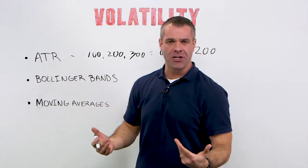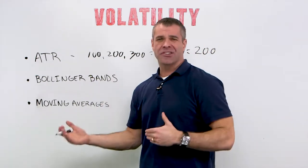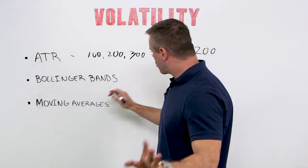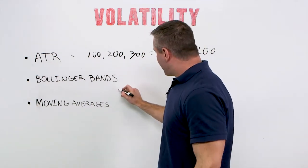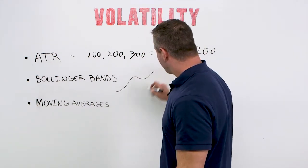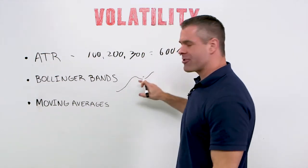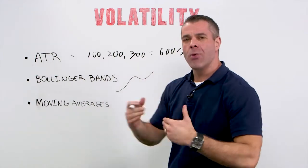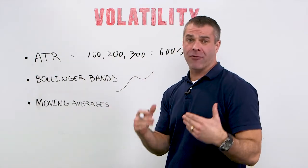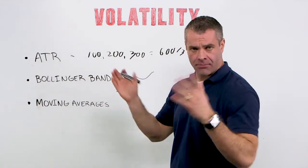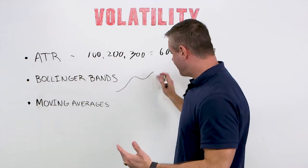We've talked about moving averages in other videos, such as simple moving averages. Let me give you a quick example. Let's say this is a moving average — a 21-day average price of, say, the dollar yen.